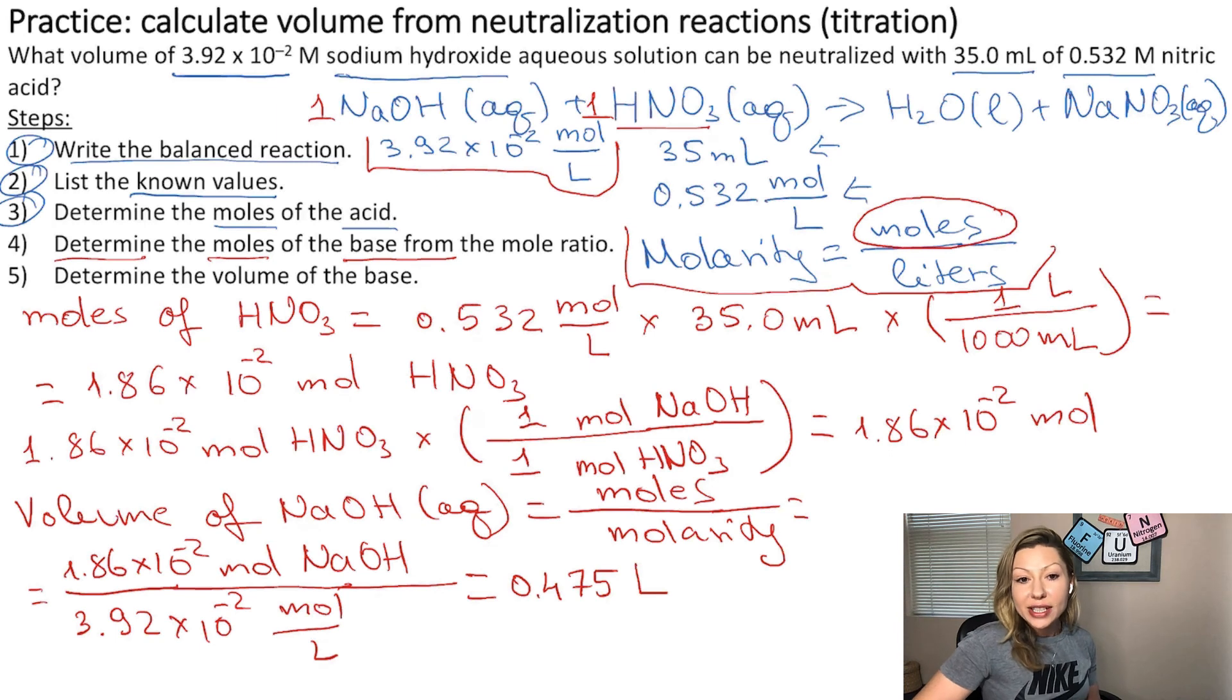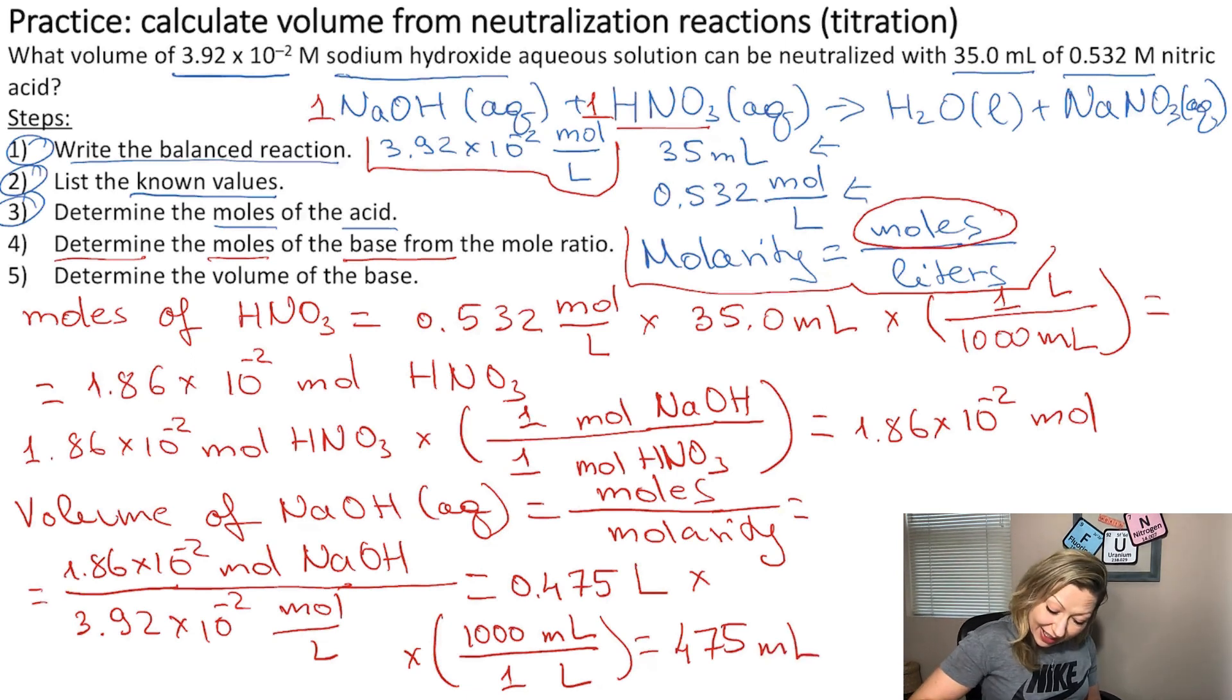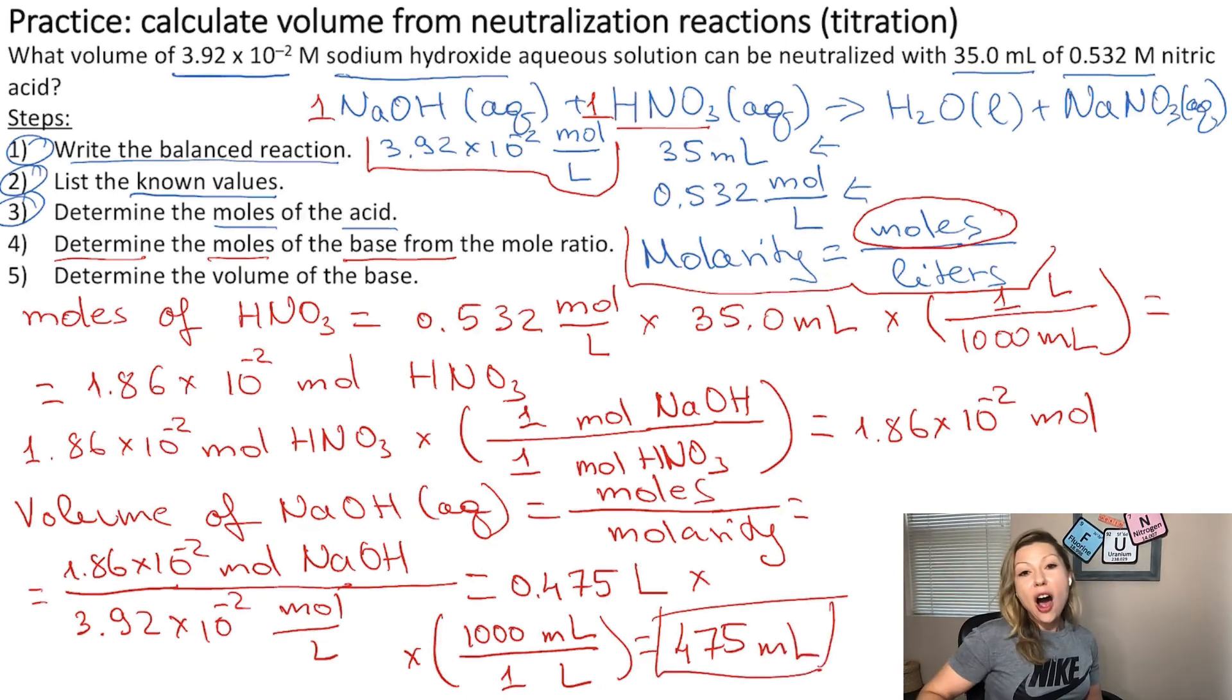We can convert this into milliliters. If we do that using the following conversion factor, liter on the bottom, milliliters on the top, 1 and 1,000, we are going to arrive at 475 milliliters. So that is the final volume of the sodium hydroxide aqueous solution.